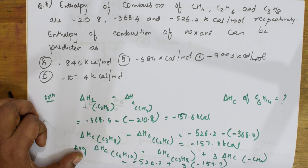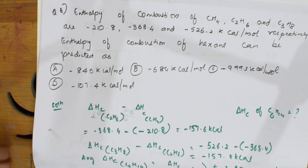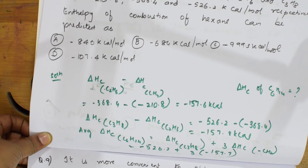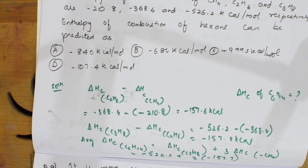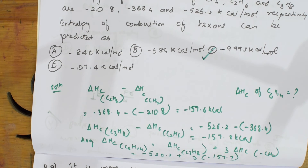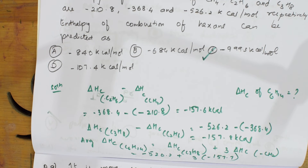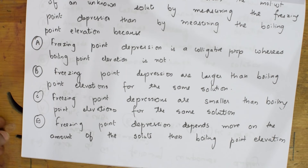After solving the equation, the final answer is −993.3 kcal/mol. So the correct option is C. Let's come back and do the next question.